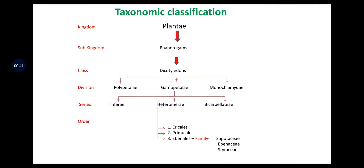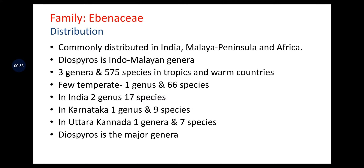Ebenales order is divided into Sapotaceae, Ebenaceae and Styraceae family. The Ebenaceae family has further 3 genera and 575 species in tropics and warm countries, commonly distributed in India, Malaya Peninsula, and Africa. Diospyros is the Indo-Malayan genera. In temperate regions, there is 1 genus and 66 species. In India, 2 genera and 17 species. Diospyros is the major genera.